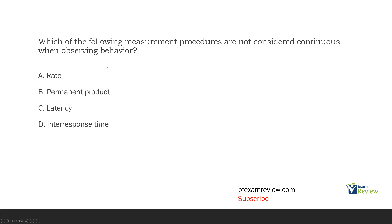Option B: permanent product. Is permanent product continuous? Not technically — it kind of lives on its own. Do we observe behavior with permanent product? Most of the time, no — that's one of the advantages. With permanent product, we're not so much concerned about the behavior itself; rather, what did that behavior produce? We don't need to observe the behavior, and it's not technically continuous. Option C: latency — continuous? Yes. Observe behavior? Yes. Option D: inter-response time — continuous? Yes. Observe behavior? Yes. The answer is B, permanent product.